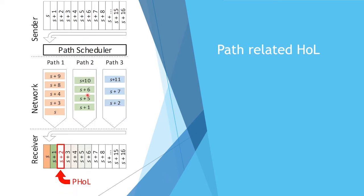The second is path scheduler head-of-line blocking. If you have a stream split over three paths and for some reason the blue path is throttled, then data arriving from red and green channels cannot be delivered to the receiver until the missing blue segment is delivered. This increases the protocol delay significantly.